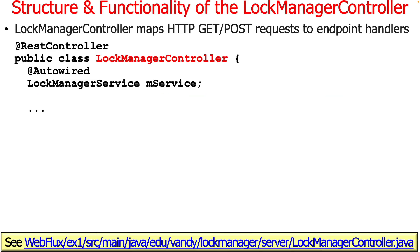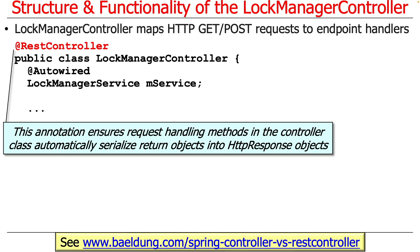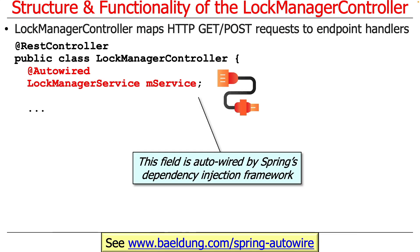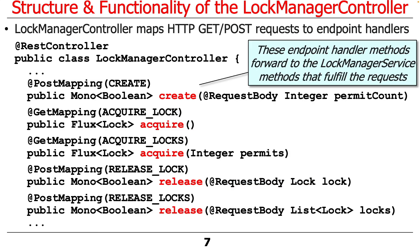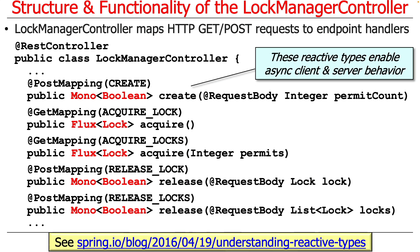At first, it looks very similar. We've got a lock manager — no surprise there. We've got a REST controller annotation, an auto-wired service. This should start to be kind of paint-by-numbers at this point; it always looks exactly the same. But then we get into more interesting things. These are now the endpoint handler methods defined using the Spring annotations. We have the same method names as before: create, a couple of acquire methods, a couple of release methods — but the return values are very different.